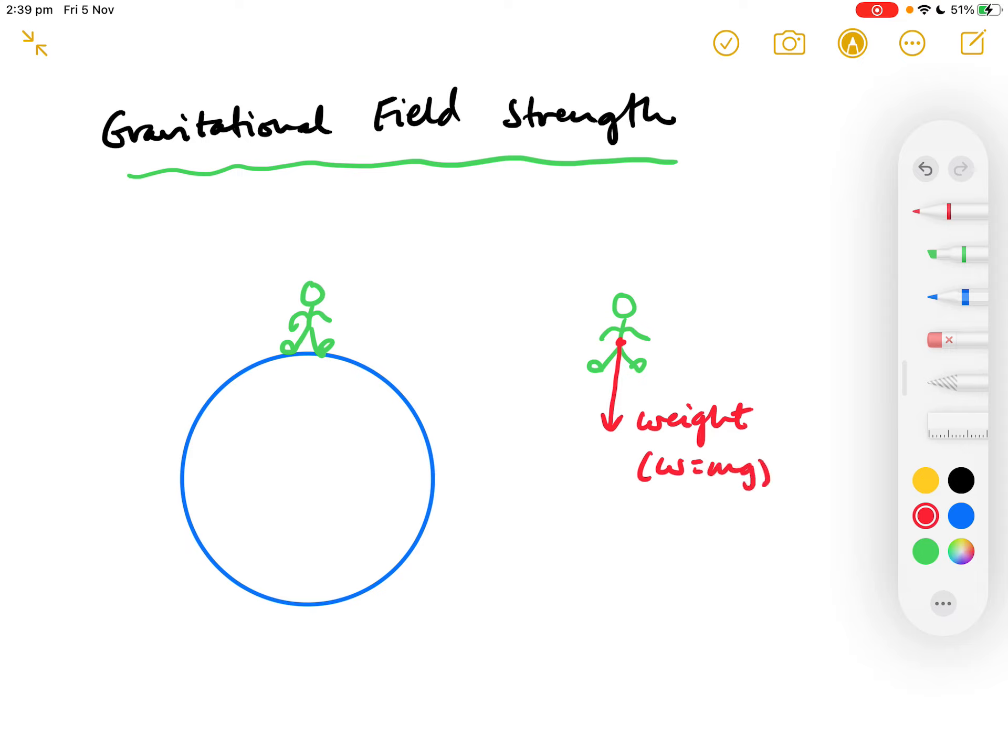And weight, as you know, is given the simple expression W equals Mg. G being the gravitational field strength of the planet. But we can now apply Newton's universal law of gravitation.